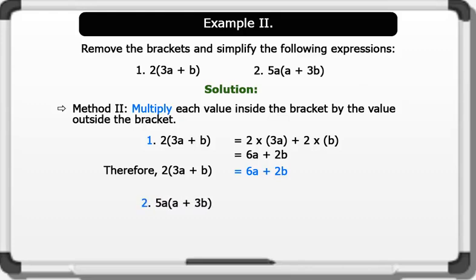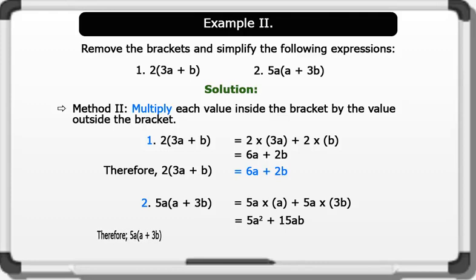2) 5a bracket a plus 3b. Using Method 2: 5a times a plus 5a times 3b, which equals 5a squared plus 15ab. Therefore, 5a(a + 3b) equals 5a squared plus 15ab. That's awesome!